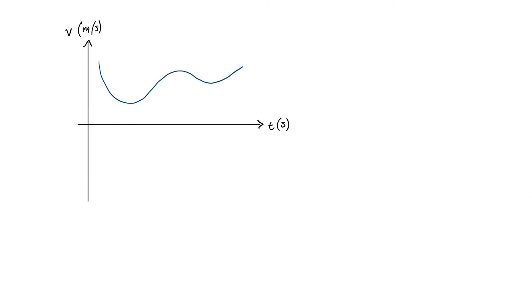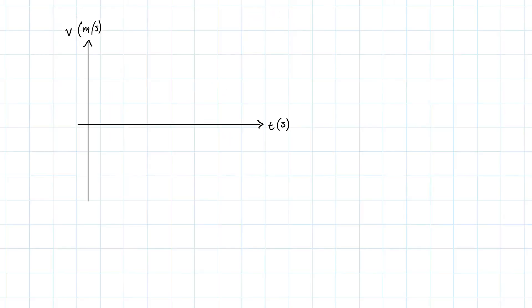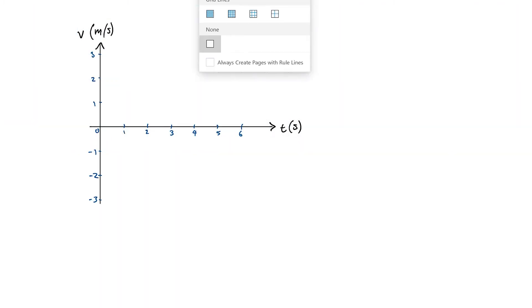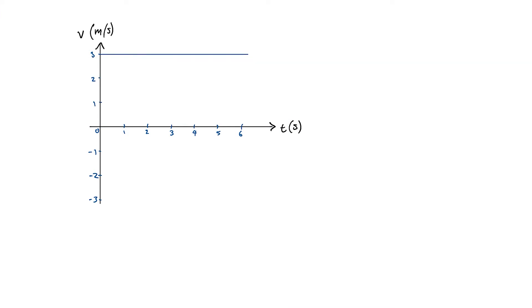Let's start by seeing if we can figure out displacement from velocity. We have an interval and we want to know the overall displacement delta x over that interval. Let's start with a simpler example where velocity is constant — just a flat velocity of three meters per second — with t0 equal to zero seconds and tf equal to five seconds, giving us a delta t of five seconds overall.